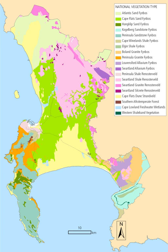These 19 vegetation types are mostly restricted to unusually small areas, and several are completely endemic to the city, occurring nowhere else in the world. Vegetation types include the following.